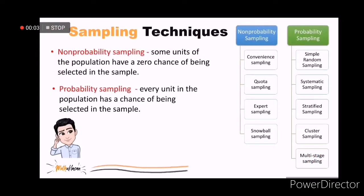After you select a frame, you draw a sample from the frame and there are two types of sampling techniques that we could use: the non-probability sampling and the probability sampling. In a non-probability sampling, some units of the population have a zero chance of being selected in the sample, while in the probability sampling, every unit in the population has a chance of being selected in the sample. Under the non-probability sampling, we have the convenience sampling, the quota sampling, the expert sampling, and the snowball sampling. Under the probability sampling, we have simple random sampling, systematic sampling, stratified sampling, cluster sampling, and multi-stage sampling.